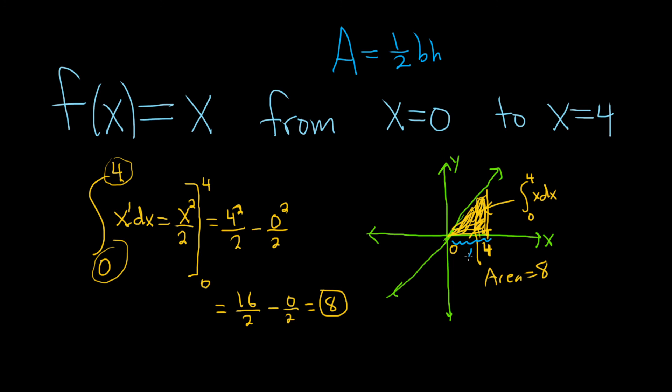So the base here is 4. So it's 1 half times 4. And the height is also 4. Because if you plug in 4 to the x, you get 4 for the y. 4 comma 4. So it's 4 times 4. So you end up with 1 half times 16, which is equal to 8.